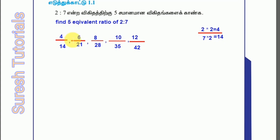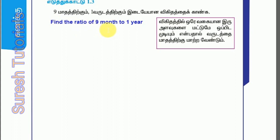So we have to tell this: 2 is equal to 7. So 9 months to 1 year. You have to ask: what are we going to do here in the month and in the year? So we will convert it in 2 months. So 9 years is 12. So simply divide. We will divide 3, 3, 3, 9. We will divide 3 — so what is the ratio of 3 is to 4?